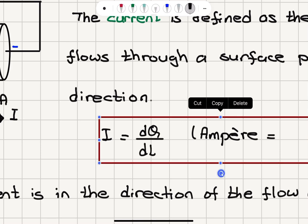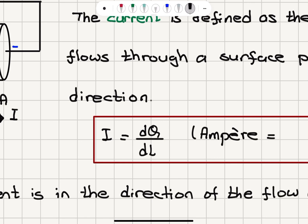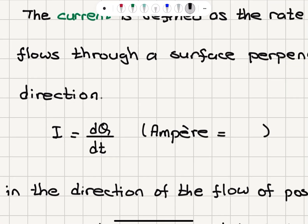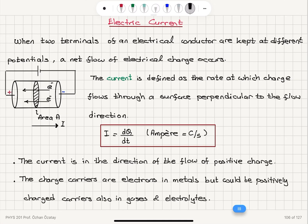Current I is defined as the rate of charge flow: it is dq/dt. In terms of units, dq/dt corresponds to coulombs per second — the SI unit — and that is called amperes. So current is dq/dt, measured in units of amperes, which equals coulombs per second.